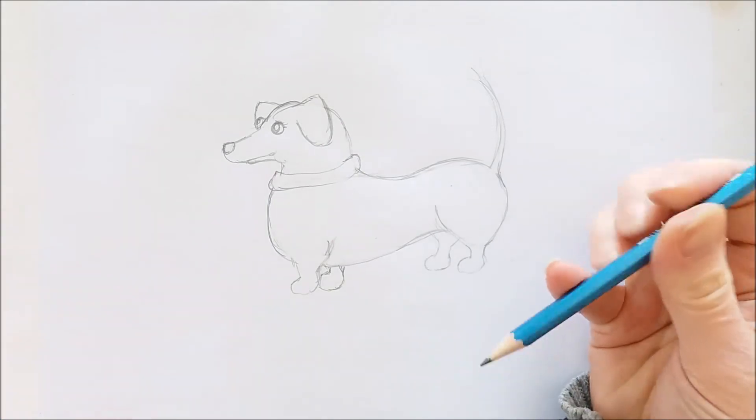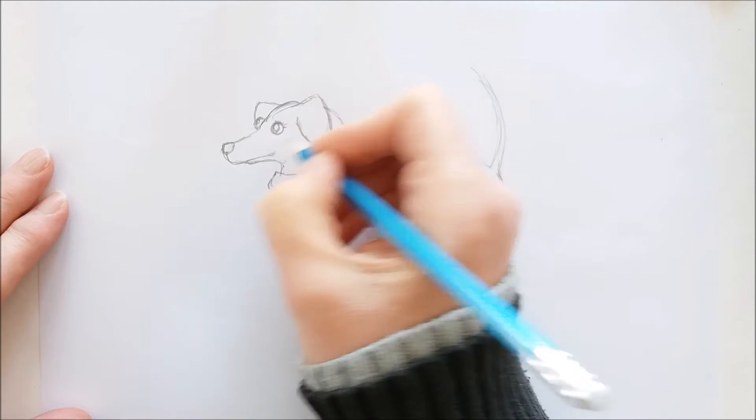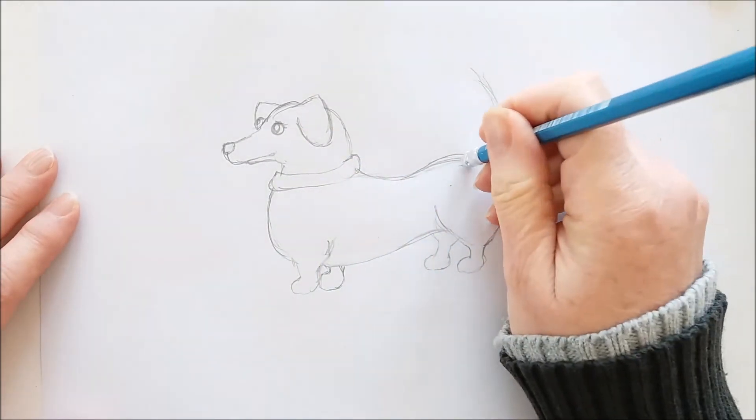And I'll add probably a dog tag and a buckle. And then when I have that all finished I'll go ahead and outline this cute little dog and color him in.